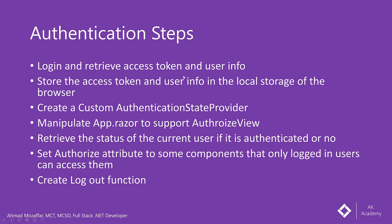To implement authentication, first we receive the access token and user info — already done. Second, we store that info in the browser's local storage, so we'll learn how to use local storage from Blazor. After that, Blazor provides something called AuthenticationStateProvider, which returns the current state of the user.